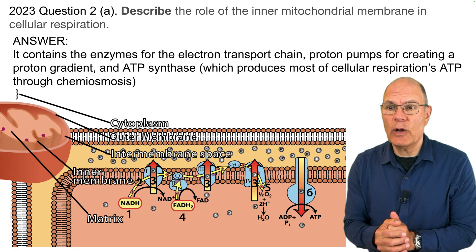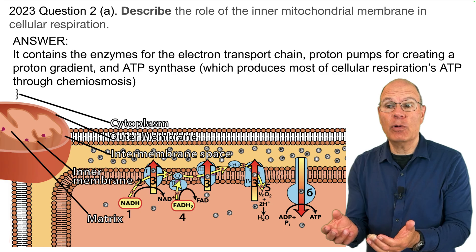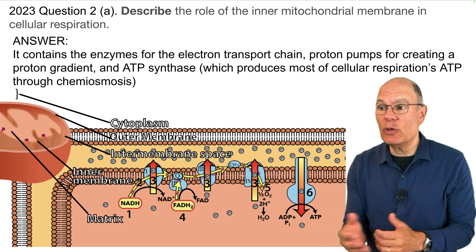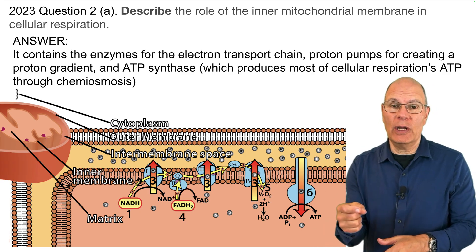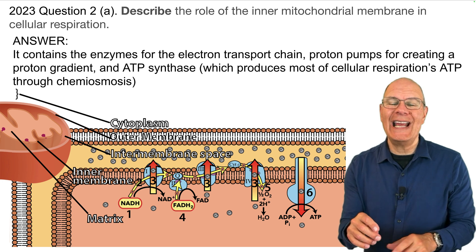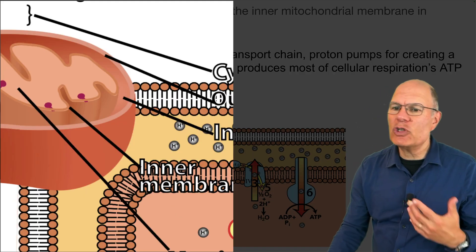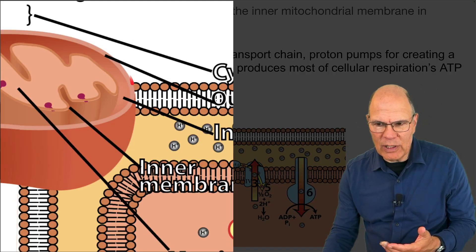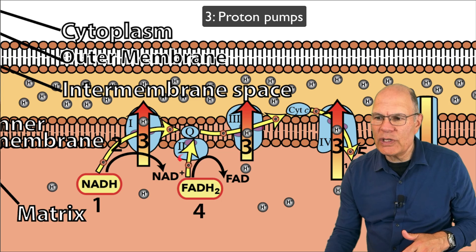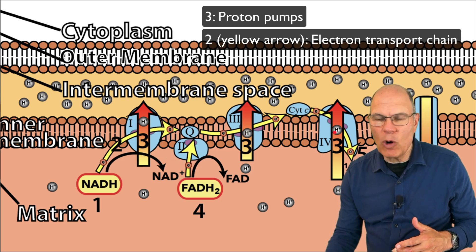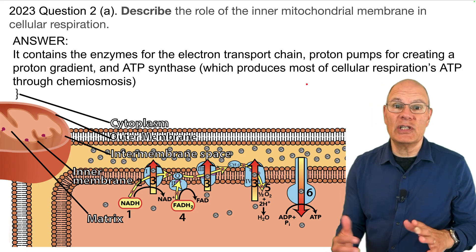Here's the answer. The inner mitochondrial membrane contains the enzymes for the electron transport chain, the proton pumps for creating a proton gradient, and ATP synthase, which produces most of cellular respiration's ATP through chemiosmosis. You should also compare your answer to the scoring guide from the College Board's website. Here's a diagram showing the mitochondria — the intermembrane space, outer membrane, and inner mitochondrial membrane with the proton pumps, proteins of the electron transport chain, and ATP synthase.